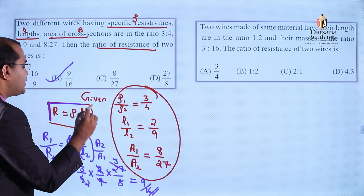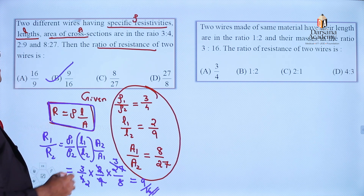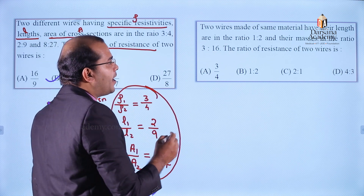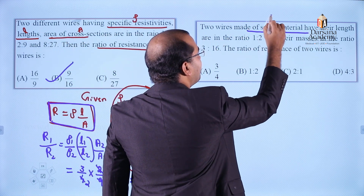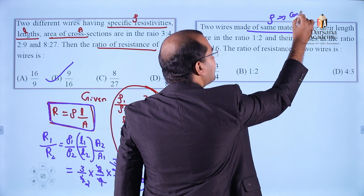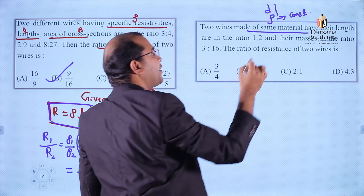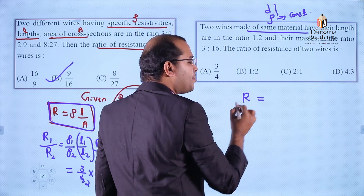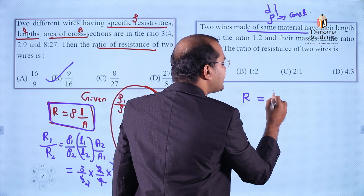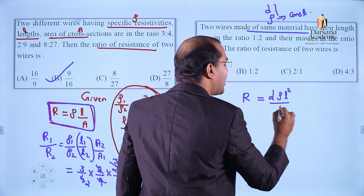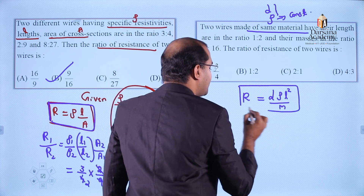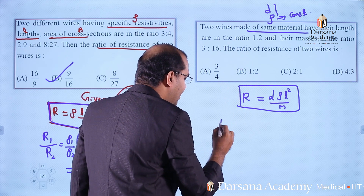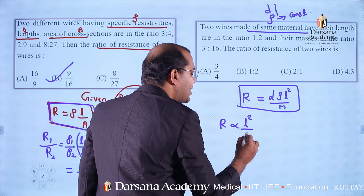For the first question we used R equals ρL/A because the wires are different, so their resistivities are different. But in the second question, the two wires are of the same material, so resistivity and density both remain constant. We use equation 2: R is proportional to L² divided by M. The given information is L1/L2 equals 1/2 and M1/M2 equals 3/16.